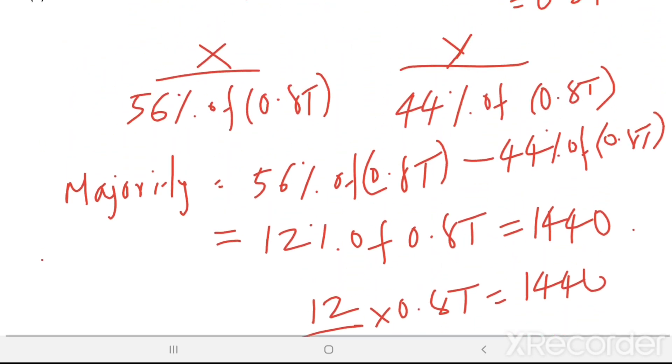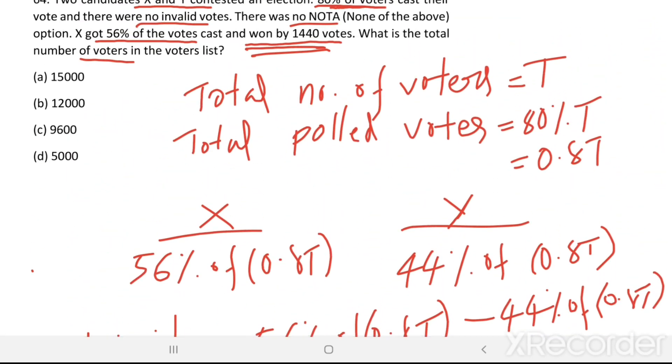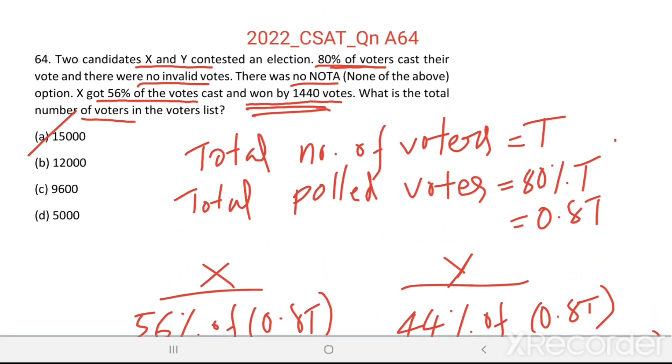Total voters. Total number of voters in the voters list is equal to 15,000. Option A is the right answer.